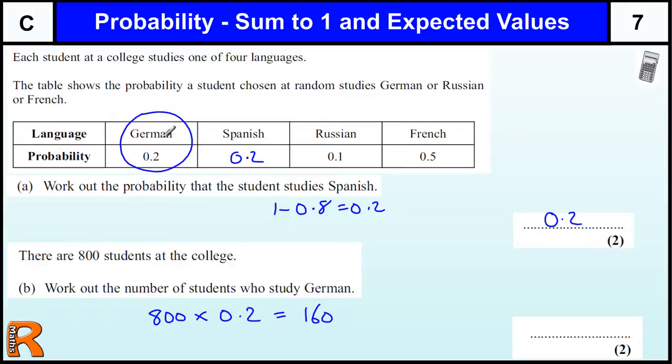If we select them at random and there's 800 students in the college, that must be 160 that are studying German.